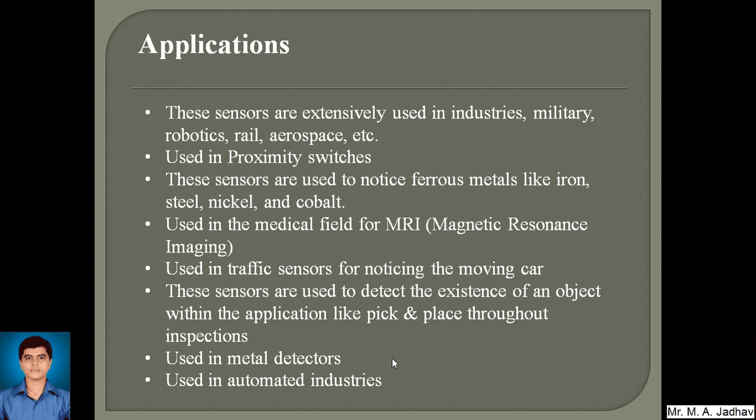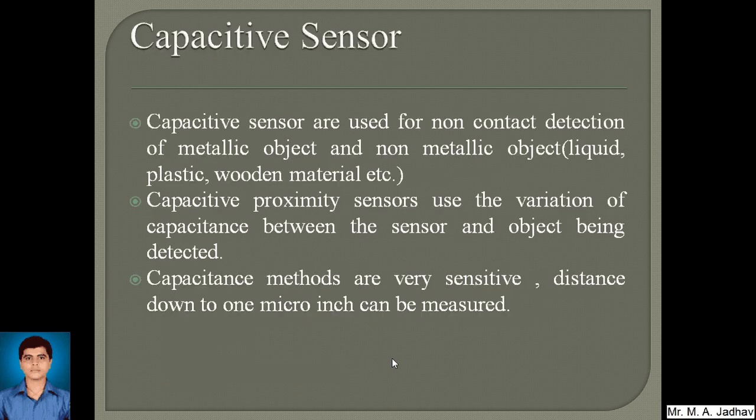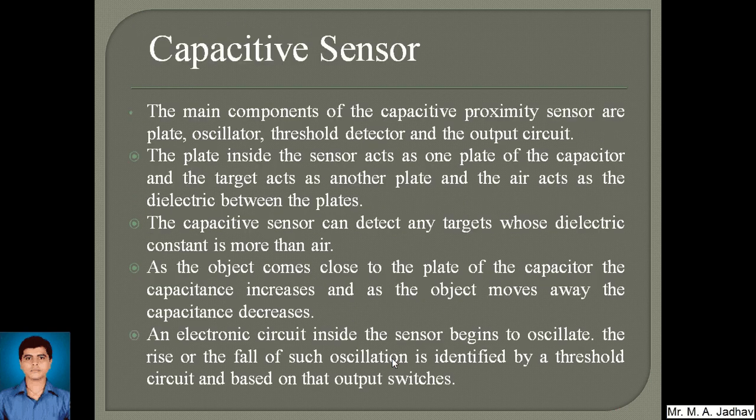Next, capacitive proximity sensors are used for non-contact detection of metallic objects as well as non-metallic objects like liquids, plastics, wood, and metal. Capacitive proximity sensors use the variation of capacitance between the sensor and the object being detected. The capacitance method is very sensitive — distances as small as one micro-inch can be measured. The capacitive sensor can detect any target whose dielectric constant is greater than that of air.